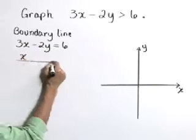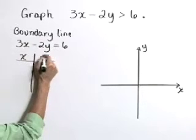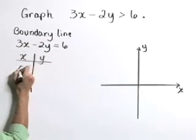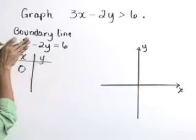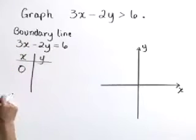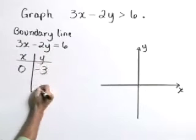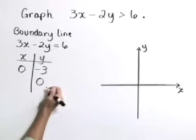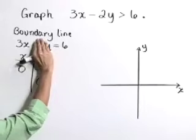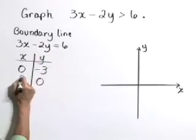I'm going to use a t-table to find intercepts. In this equation, if x equals 0, then negative 2y is 6, or y equals negative 3. If y equals 0, then 3x is 6, or x equals 2.